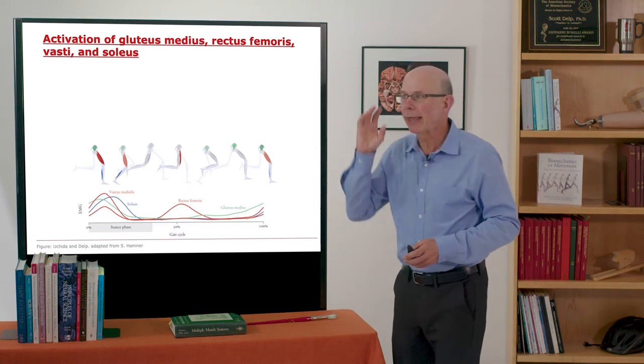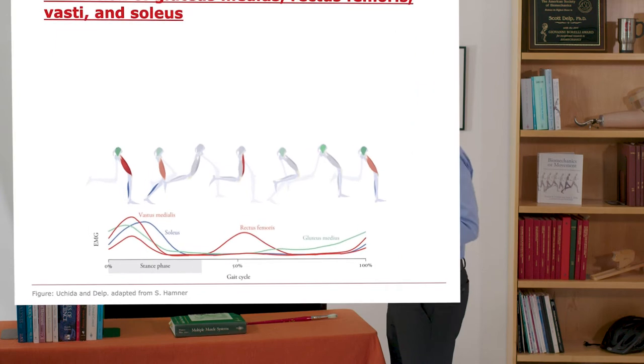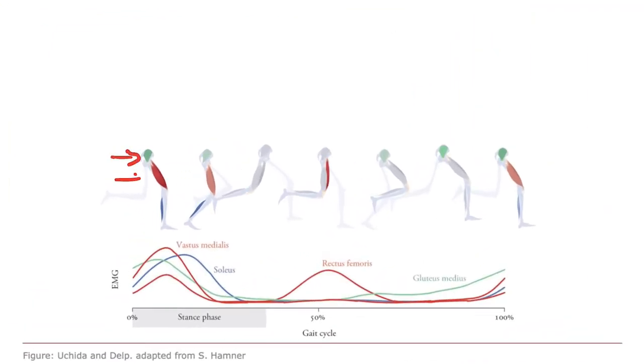First, let's look just at the activations of key muscles: gluteus medius, rectus femoris, vastae, and soleus. They're plotted here as the EMG activity or activation of the muscle versus percentage of gait cycle. Now this is running, so let's reorient a little bit. In running, the stance phase is short and the flight phase is long.